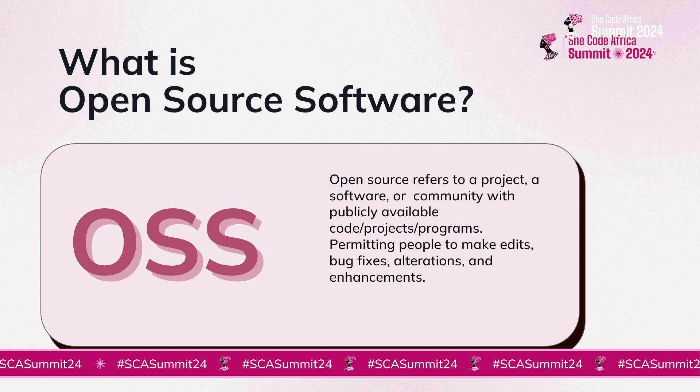Let's talk about what open source is. To simply put it, open source is a project — it could be a lot of things. I think calling it a software is very limiting, because open source could be a project, software, or a community with publicly available code, projects, and programs. These communities allow people to make changes, give suggestions, make edits, enhancements, and alterations to their projects.